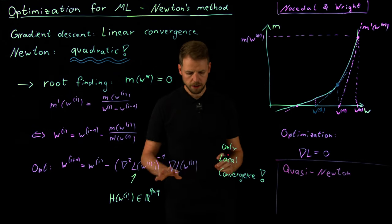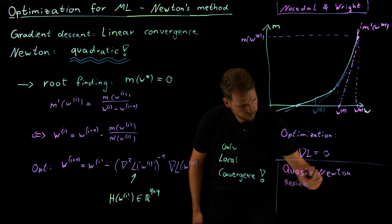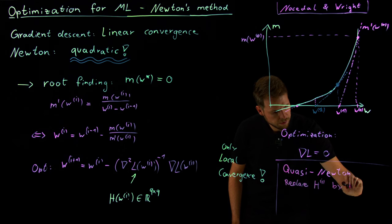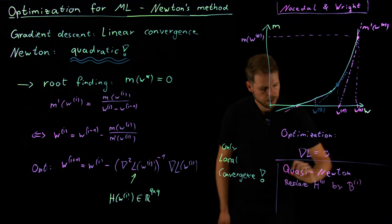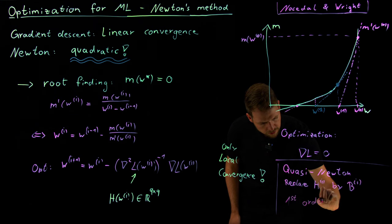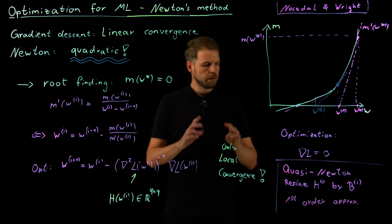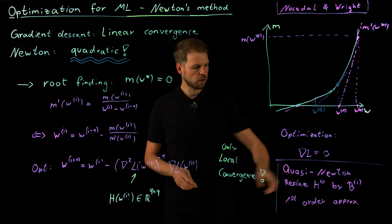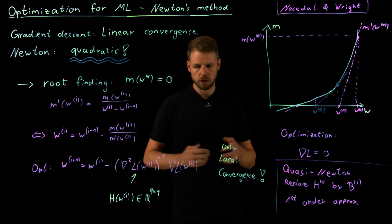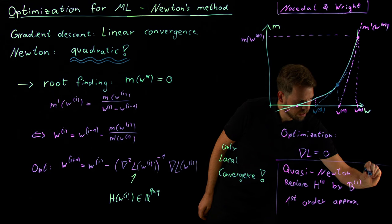When I say quasi-Newton method, what do I mean by this? It means you replace the Hessian matrix H I by a matrix B I that is a first-order approximation. So the idea is in a nutshell, we do not compute the Hessian matrix because it's so expensive. We use some matrix B that serves as a surrogate for the Hessian matrix. It's an approximation. And first-order means we build this approximation out of gradient information.